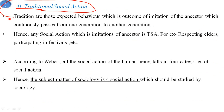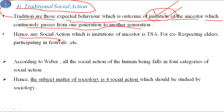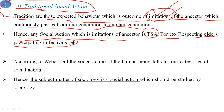The next is Traditional social action. Traditions are those expected behaviors which are the outcome of imitation of ancestors — things that ancestors did which continuously pass from one generation to another. Any social action which is an imitation of ancestors is Traditional Social Action. For example, respecting elders and participating in festivals are traditional social actions we inherit from our ancestors.